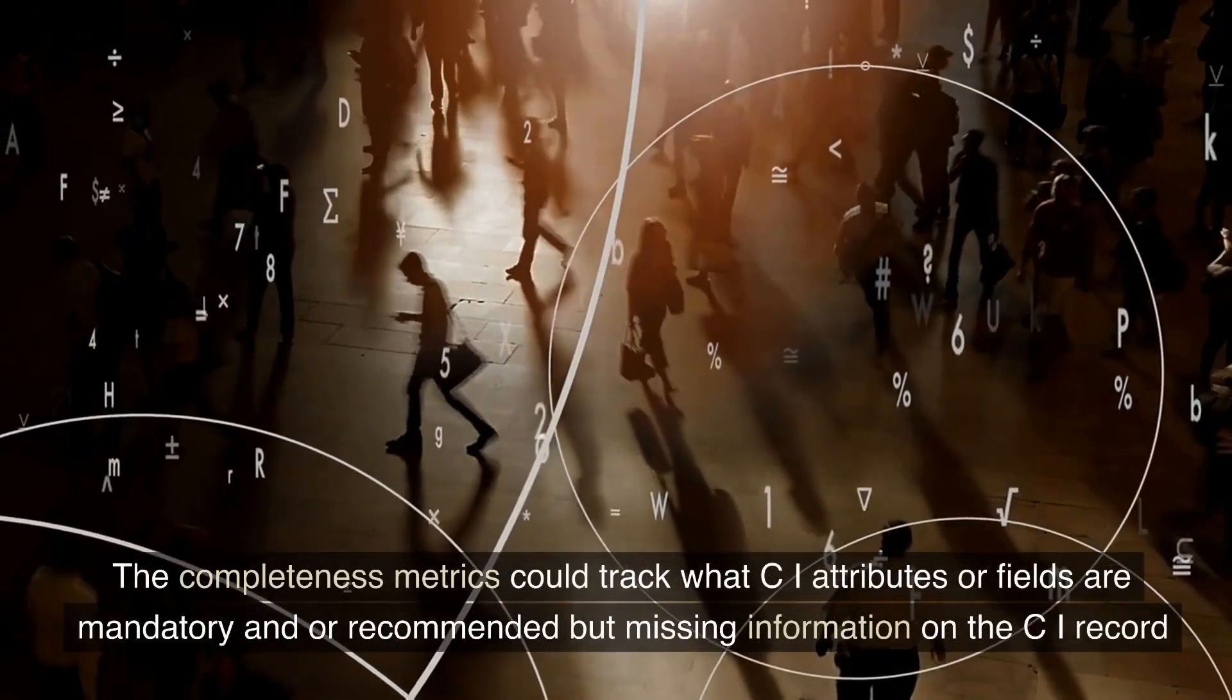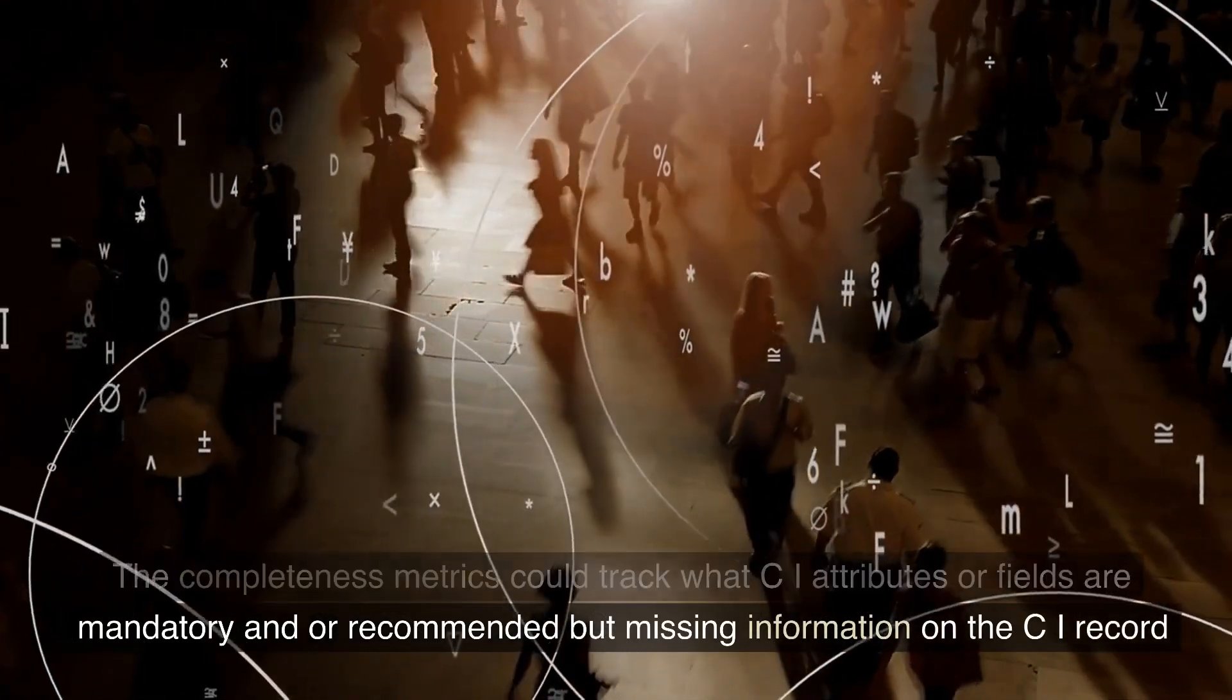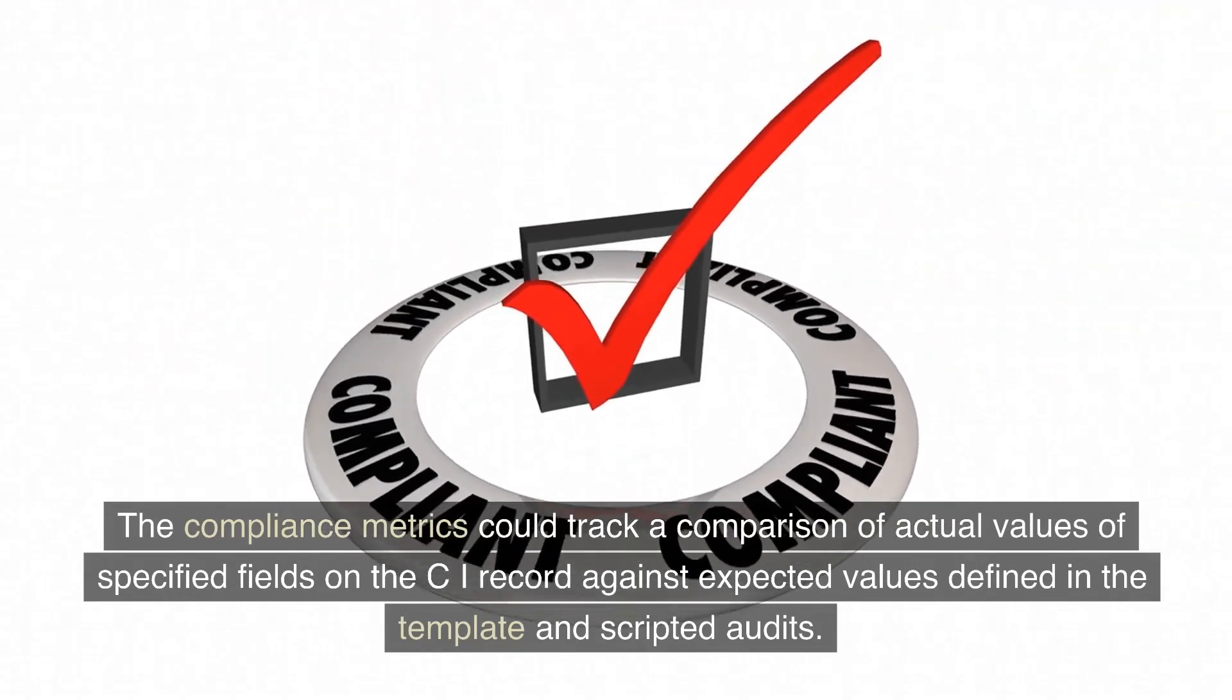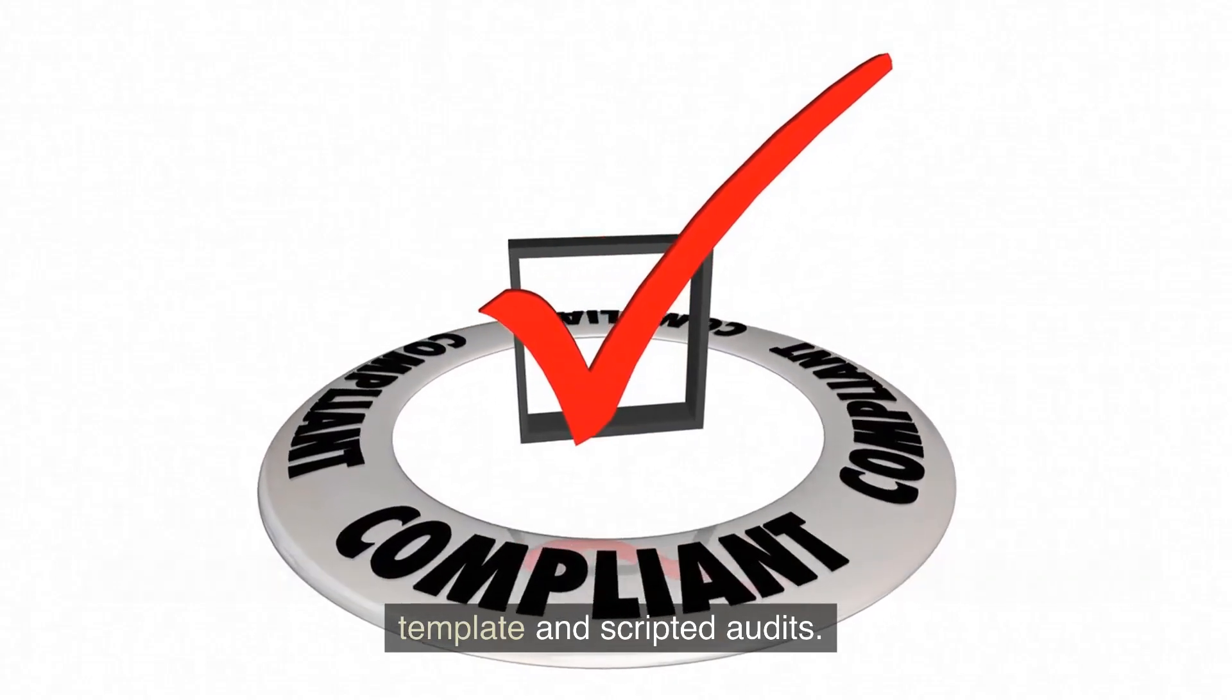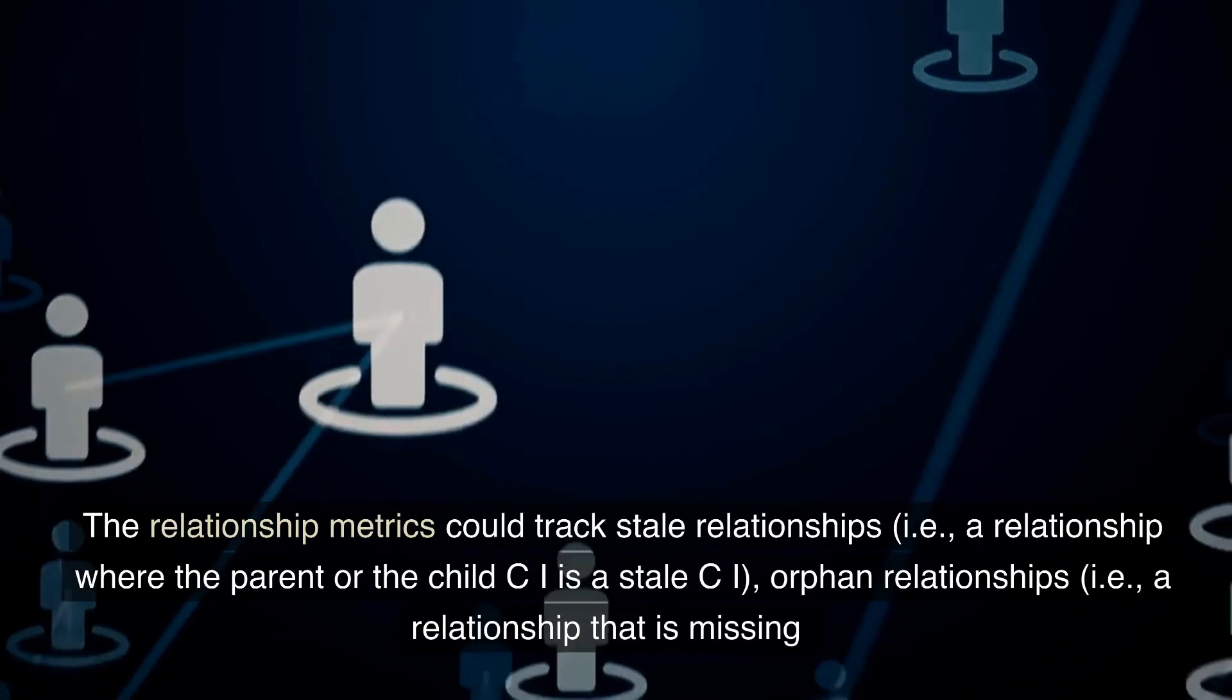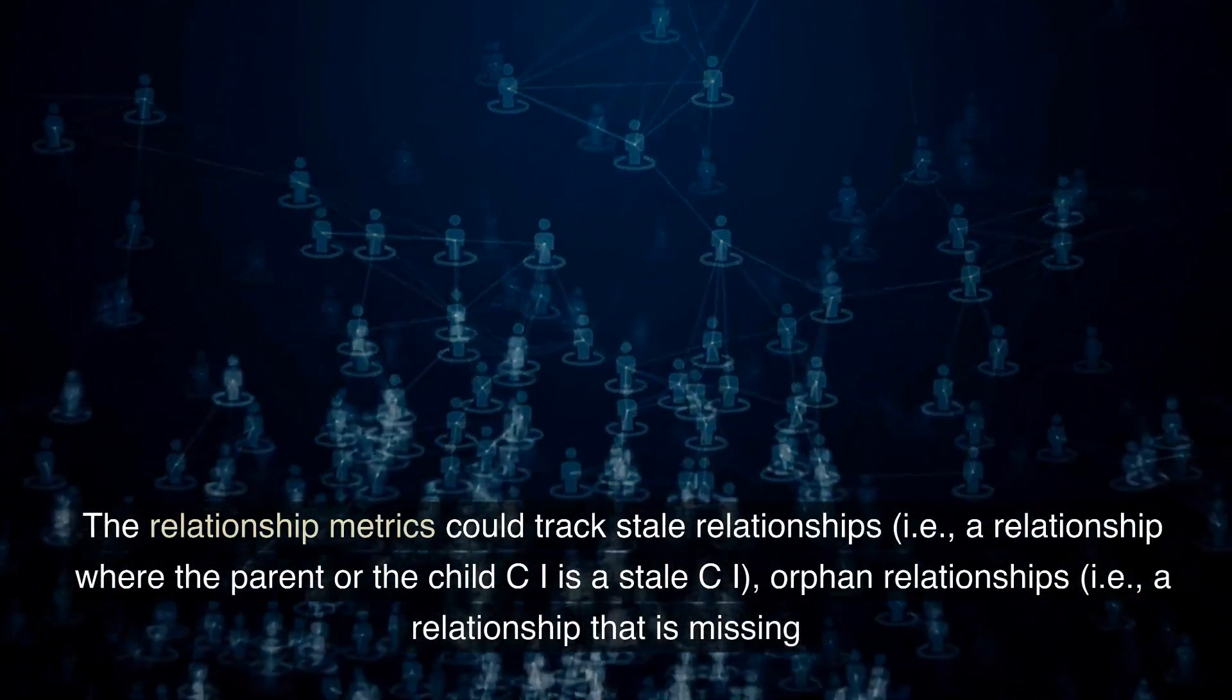The completeness metrics could track what CI attributes or fields are mandatory and or recommended but missing information on the CI record. The compliance metrics could track a comparison of actual values of specified fields on the CI record against expected values defined in the template and scripted audits. The relationship metrics could track stale relationships, i.e., a relationship where the parent or the child CI is a stale CI.